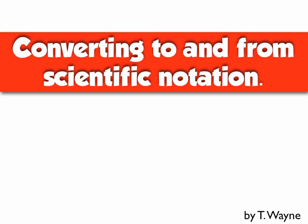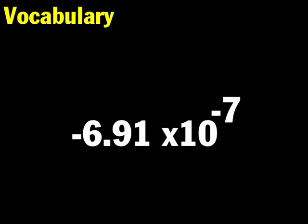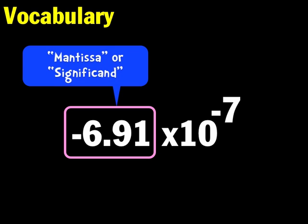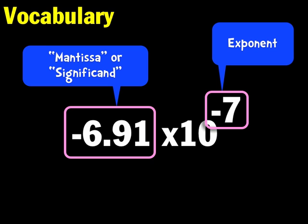This video is going to show you how to convert back and forth from scientific notation to decimal notation. First we need a little bit of vocabulary. This number is in scientific notation. The whole piece to the left of the X symbol is called the mantissa or the significant — we're going to refer to it as the mantissa in this video. This is the exponent. You need to make sure you understand what these two pieces are for a number in scientific notation.